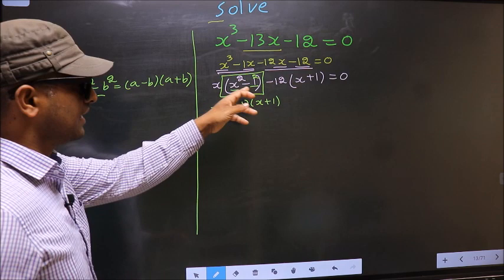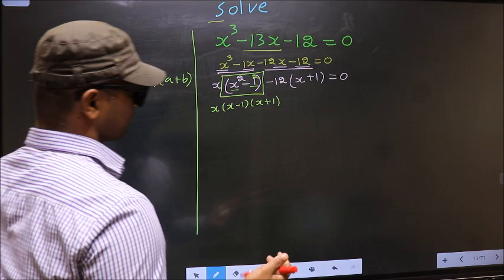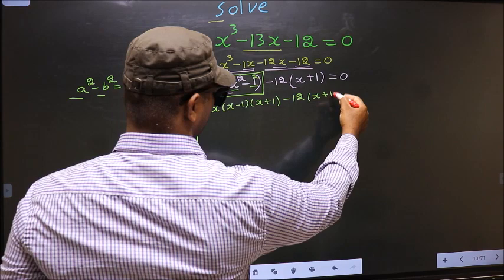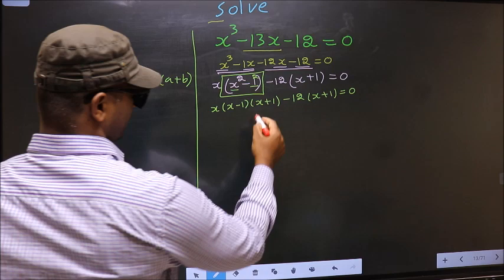On this we applied the formula a squared minus b squared, that is (a minus b)(a plus b). Now over here no change — (x plus 1) equal to 0.